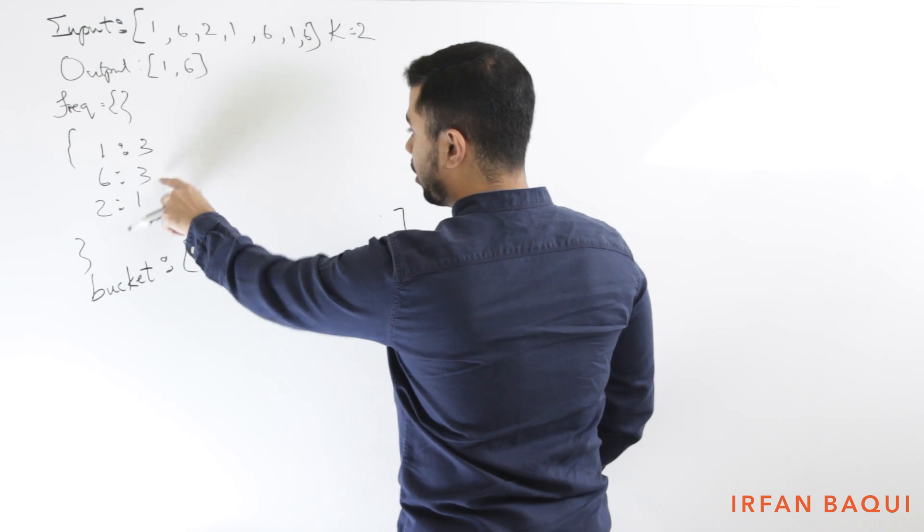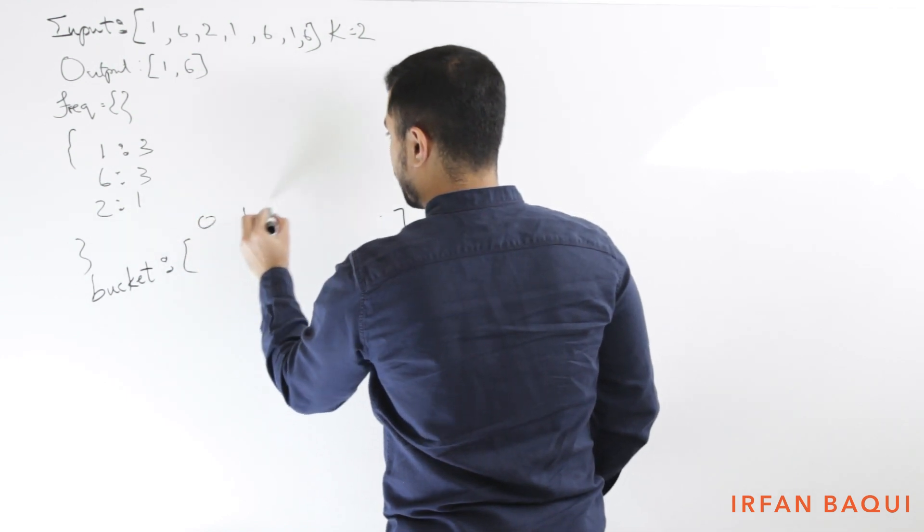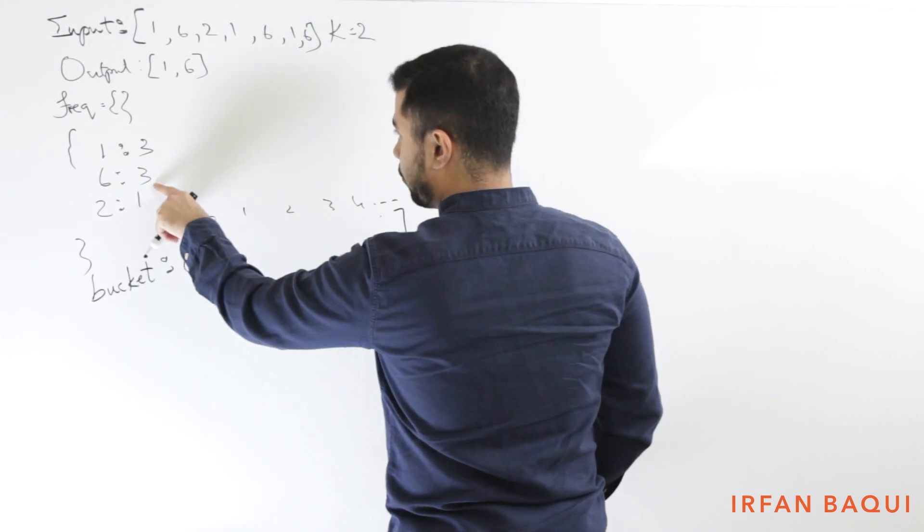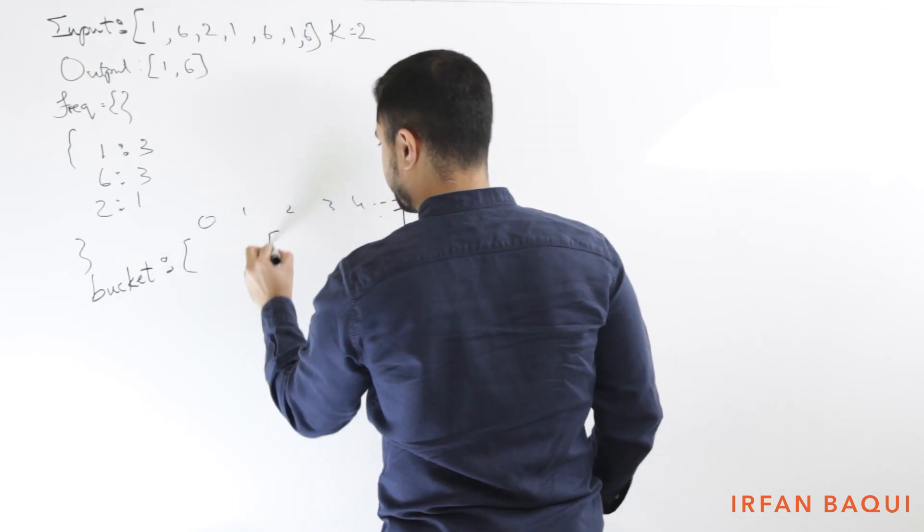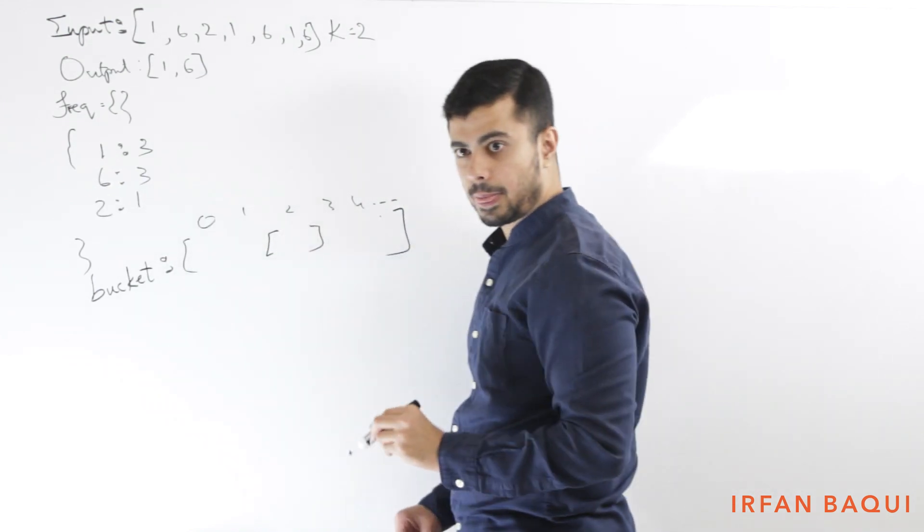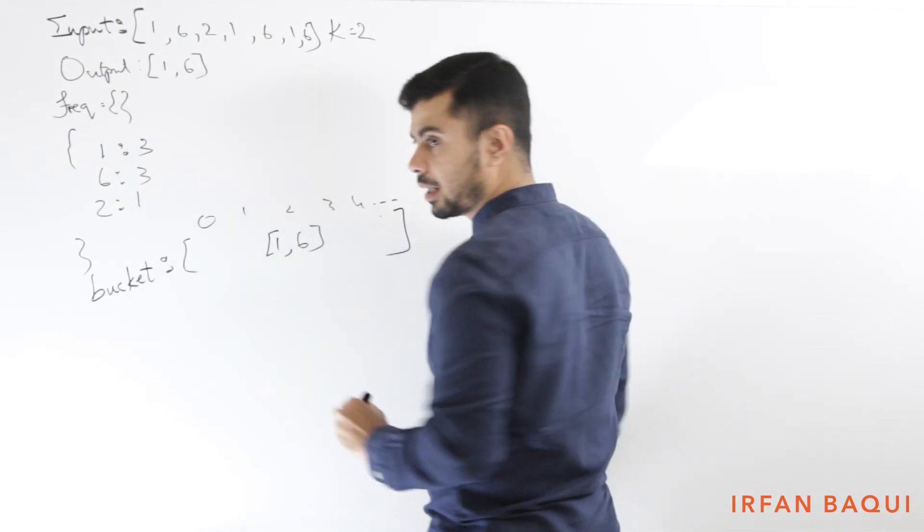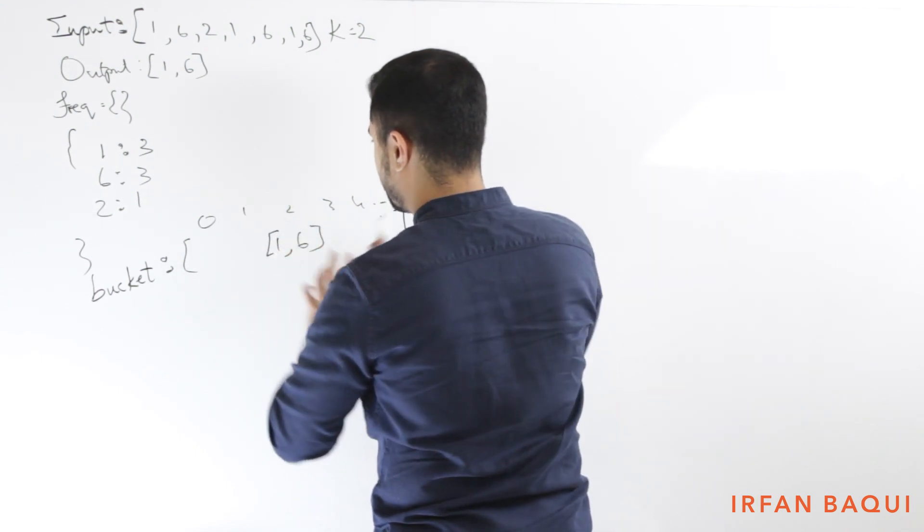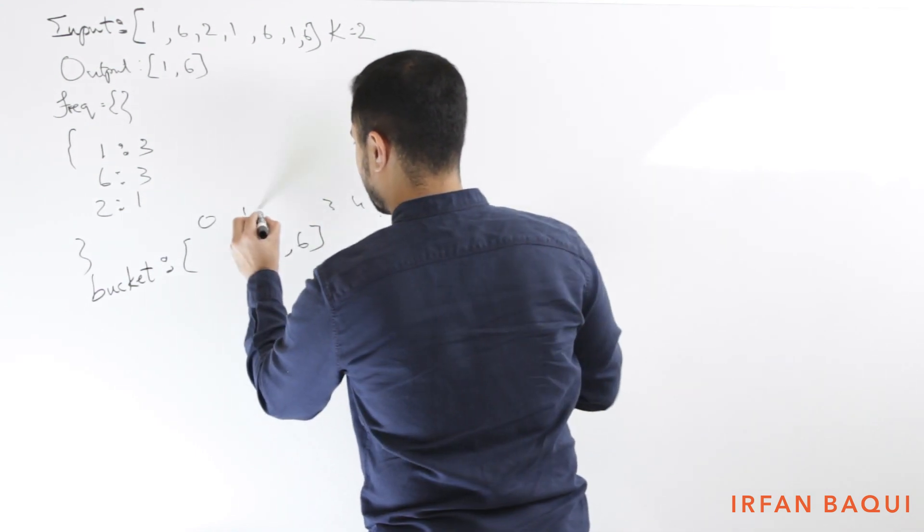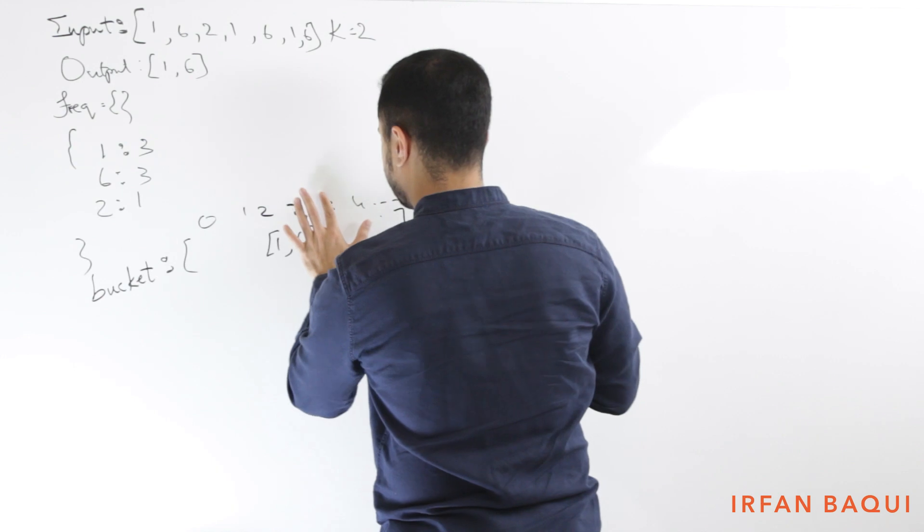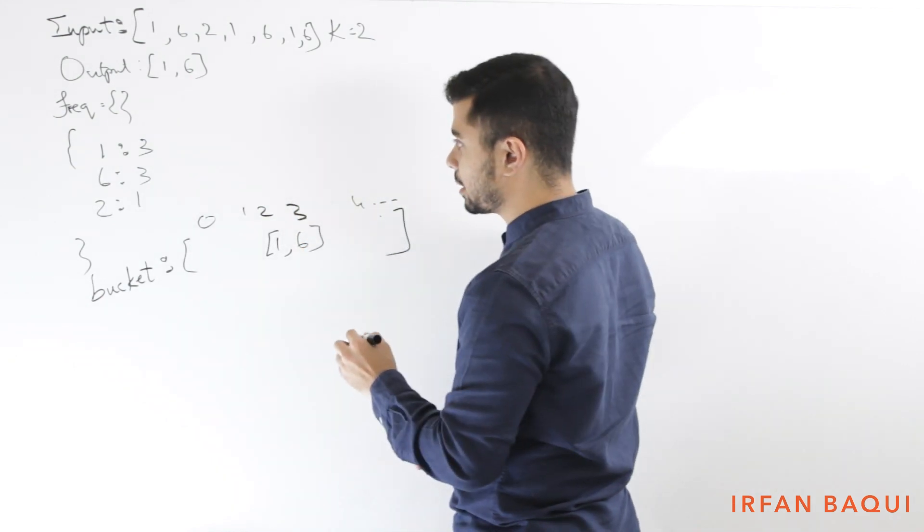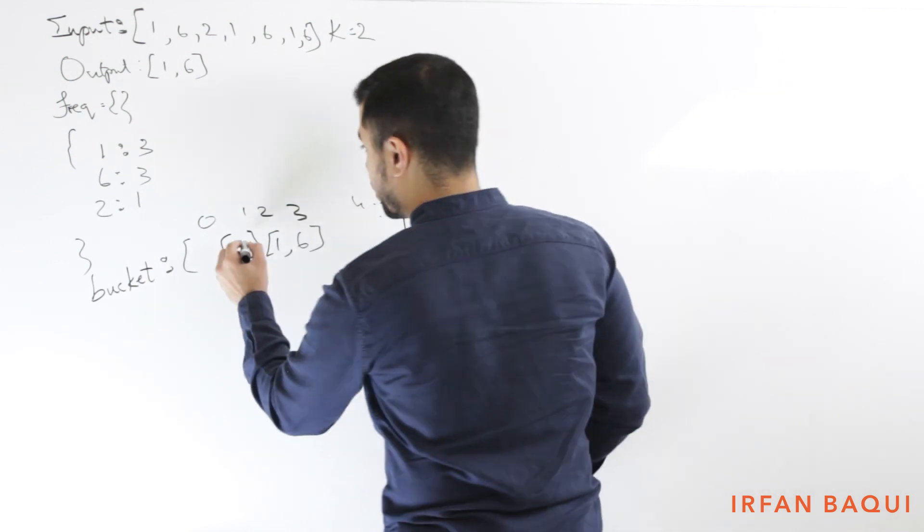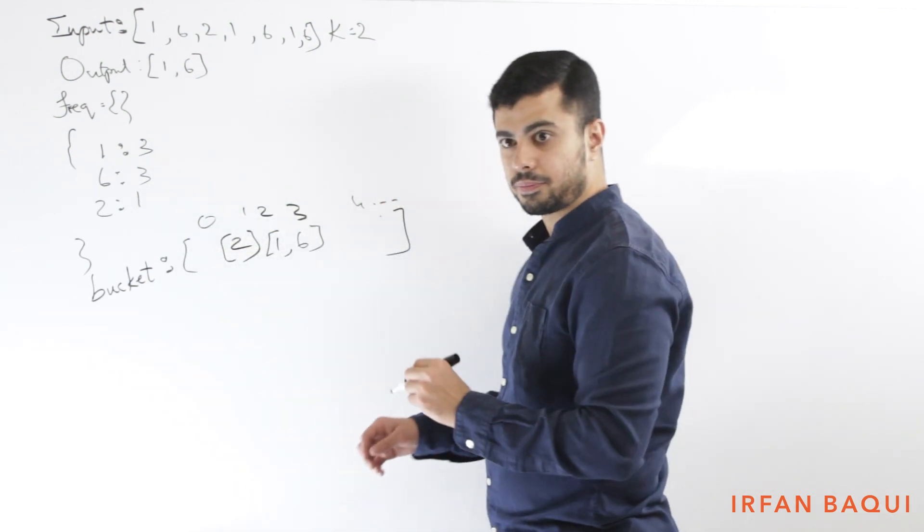So let's say for 0, 1, 2, 3, 4, and so on, for the frequency 3, I'm right here. And I have 1 and 6 in that bucket. On the other hand, for frequency 1, I'm here and I have 2 in that bucket.